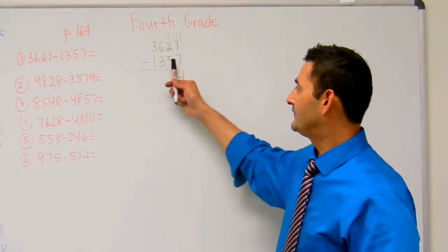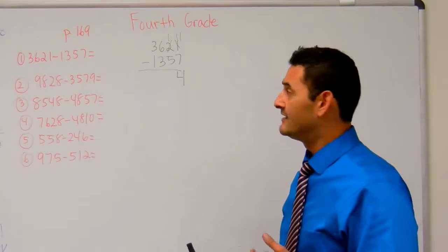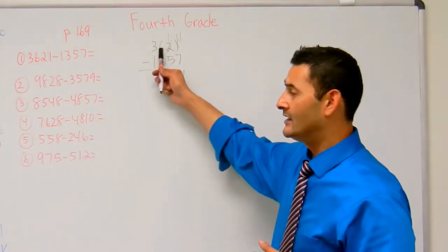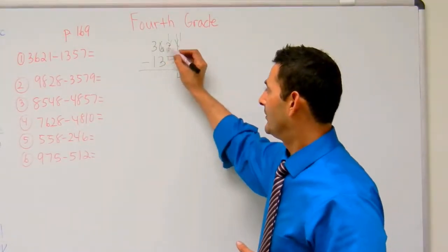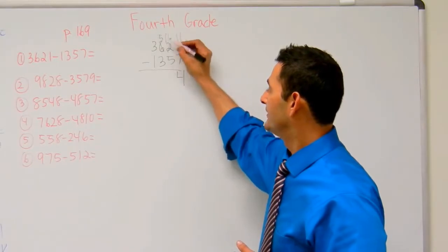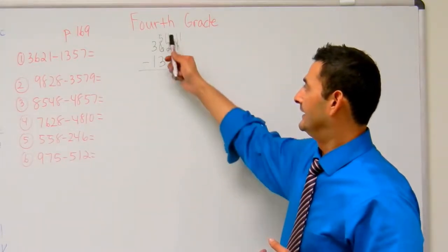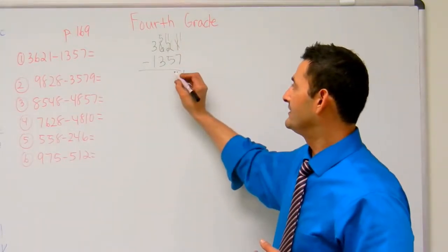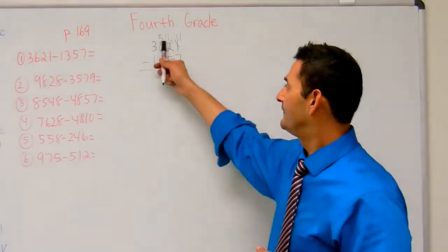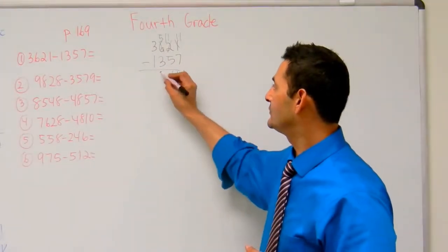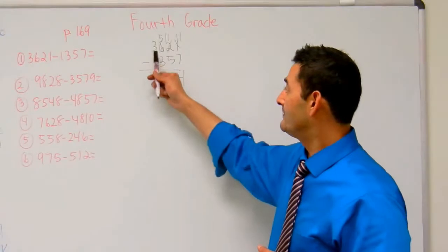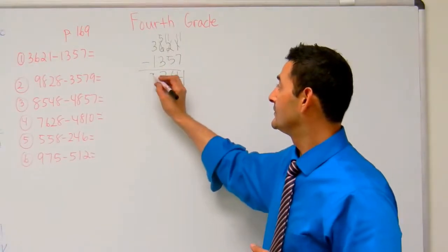1 minus 5 — can't do that. I'm going to have to borrow from the 100's place. I'm going to borrow 10 10's from the 100's. That's going to become 11. 11 minus 5 is 6. Now let's look at the 100's place: 5 minus 3 is 2. And then the 1,000's place: 3 minus 1 is 2.